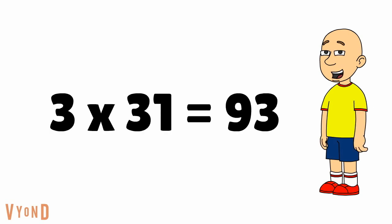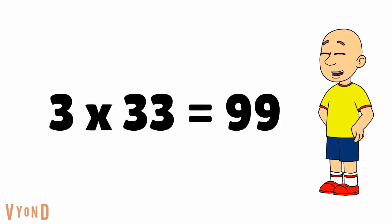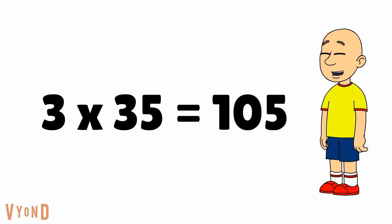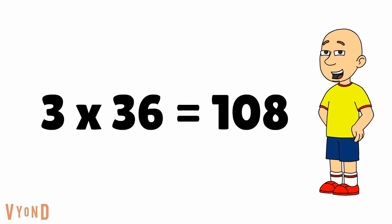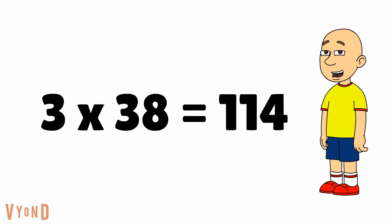3 times 31 equals 93. 3 times 32 equals 96. 3 times 33 equals 99. 3 times 34 equals 102. 3 times 35 equals 105. 3 times 36 equals 108. 3 times 37 equals 111. 3 times 38 equals 114.